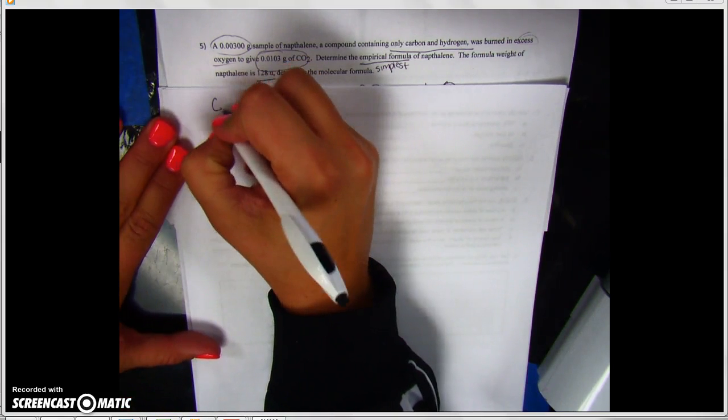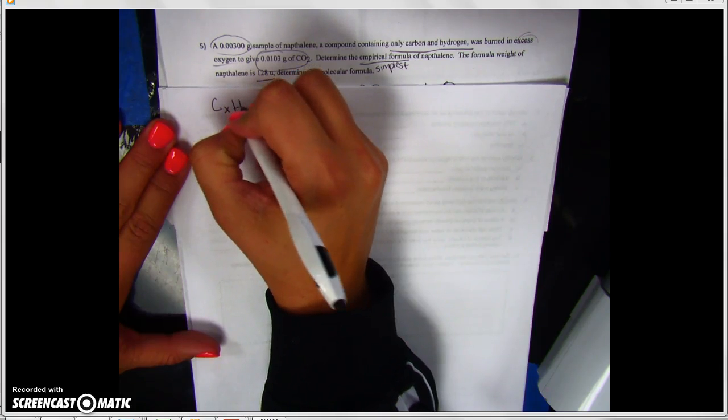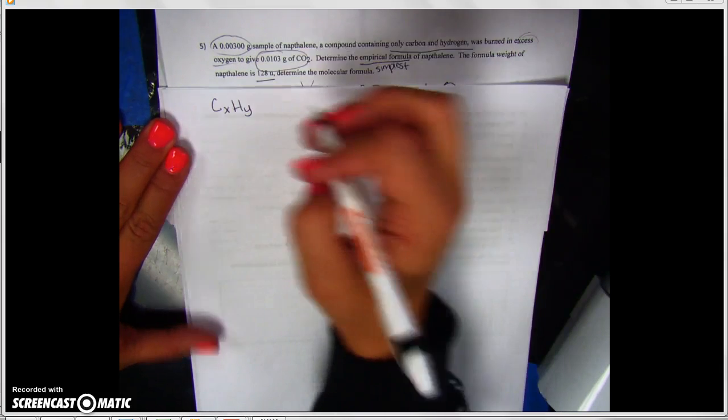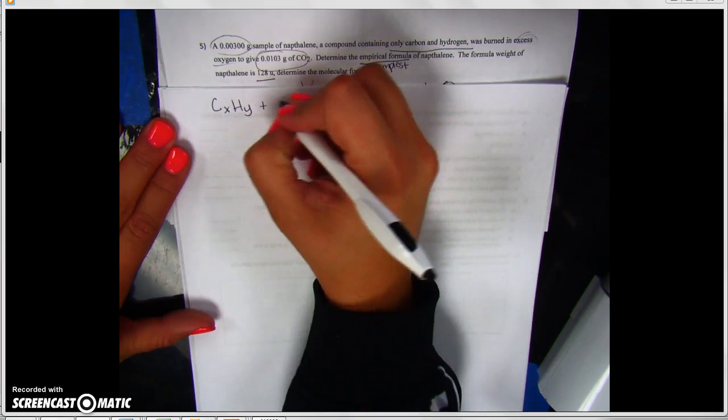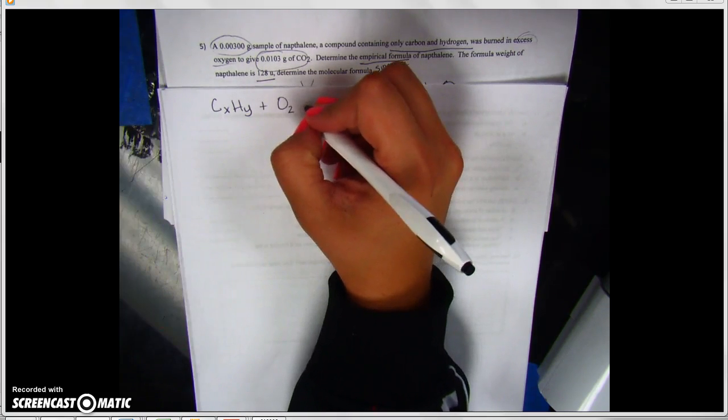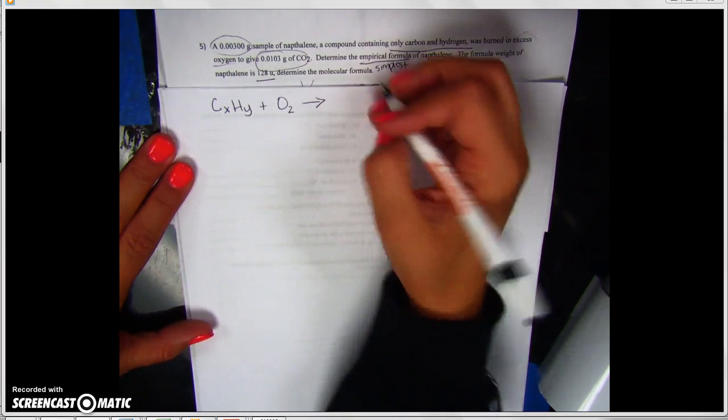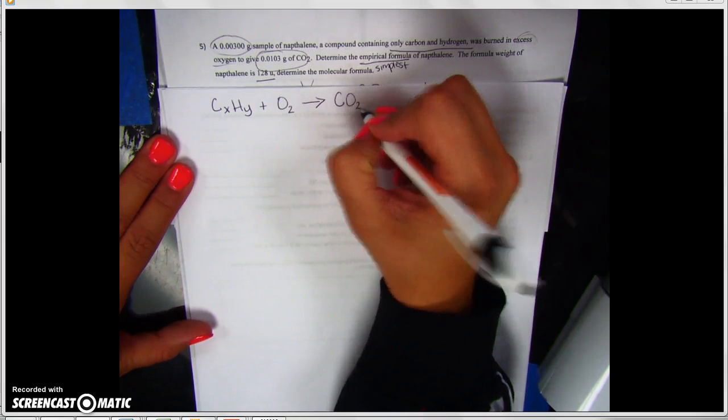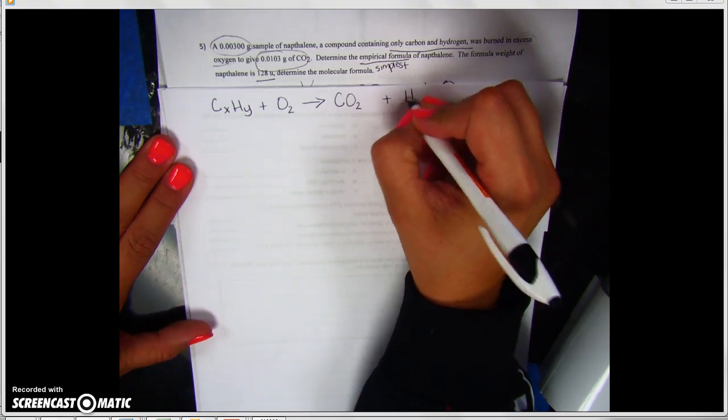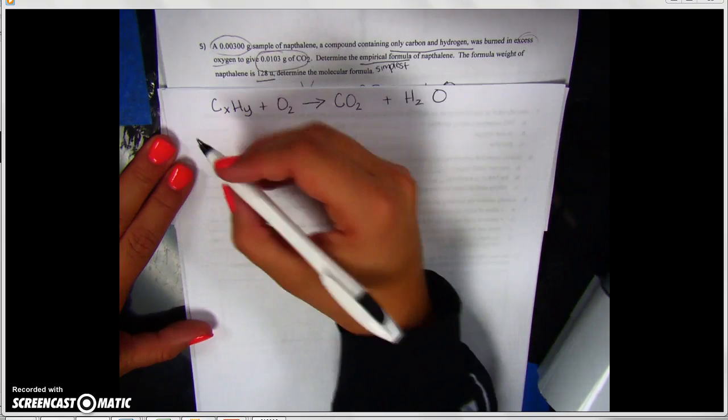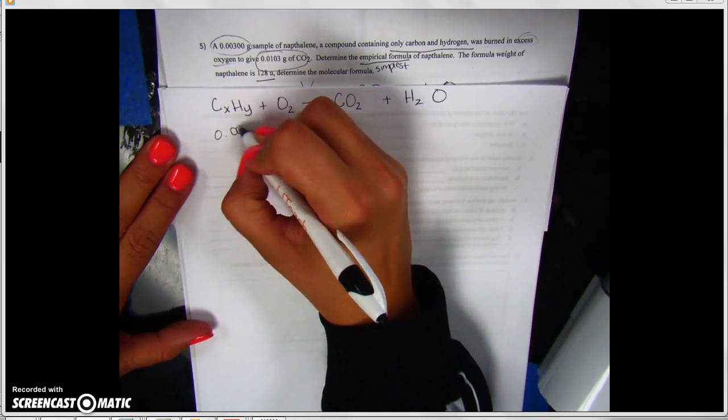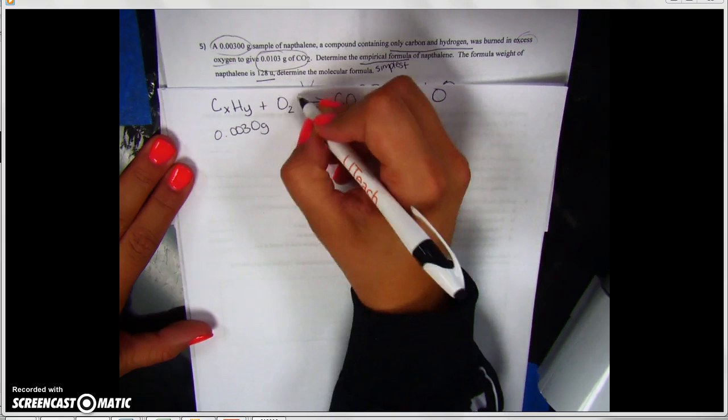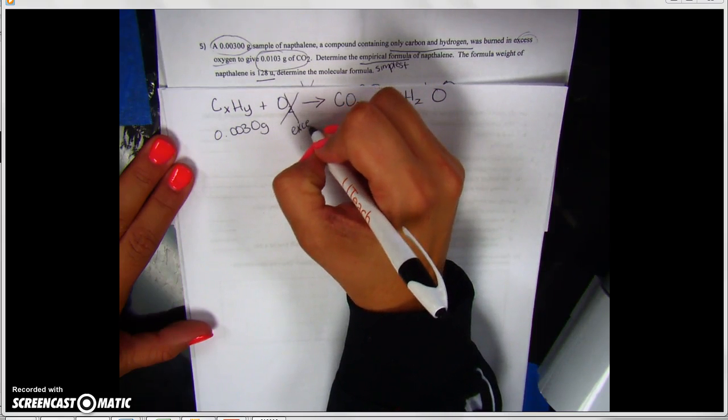It says a 0.00300 gram sample of naphthalene, a compound containing only carbon and hydrogen, was burned in excess oxygen to give 0.0103 grams of carbon dioxide. Determine the empirical formula of naphthalene. The formula weight of naphthalene is 128 units. Determine the molecular formula.